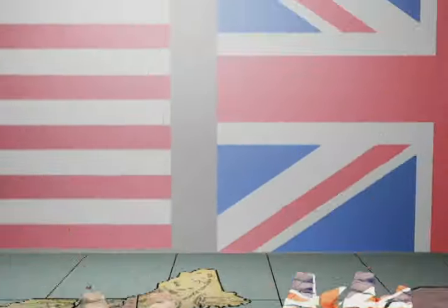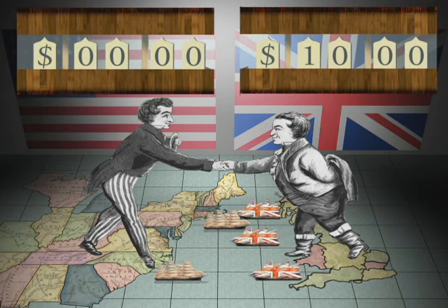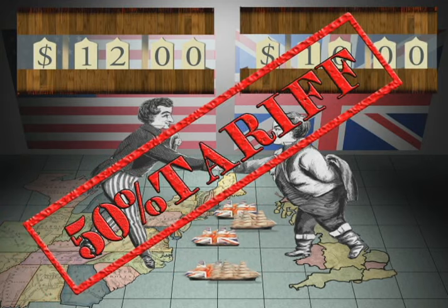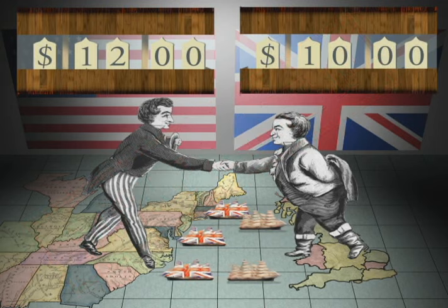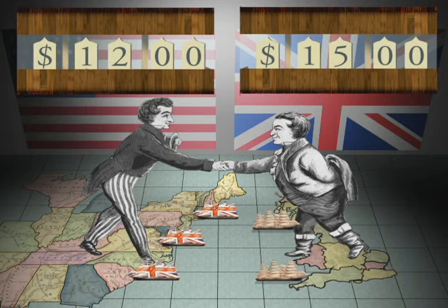The idea of a tariff is quite simple, really. It is a duty on a foreign good. Let's say the English blanket would cost $10 and Americans could only make it for $12, so there's no way they could compete. Well, if you slap on a 50% tariff, suddenly that British blanket costs $15, the American blanket costs $12, and now you've helped out domestic manufacturing.